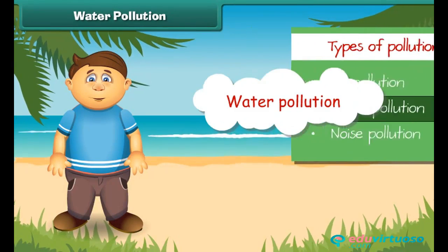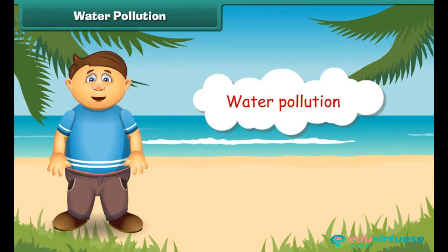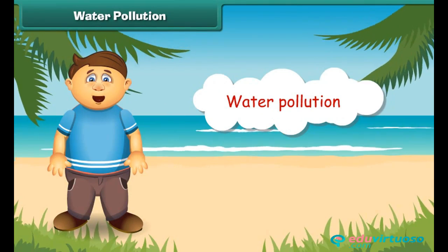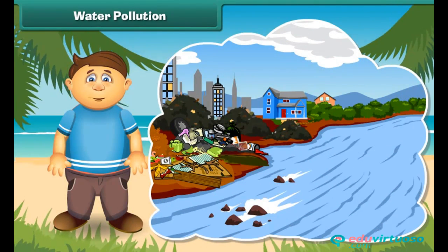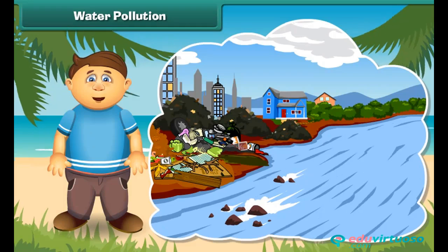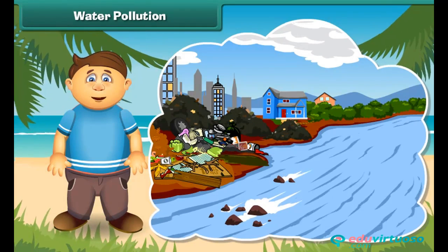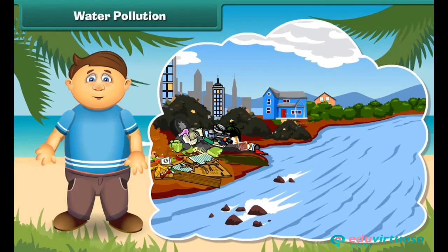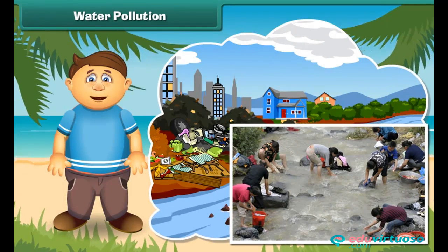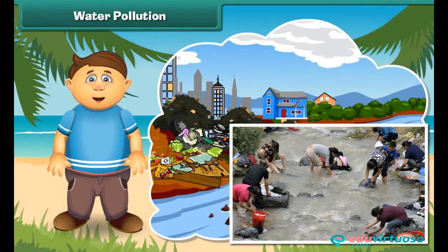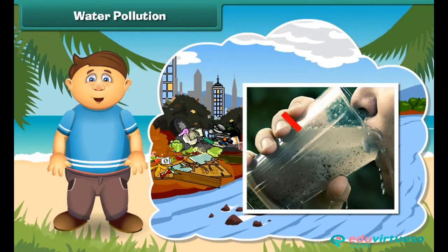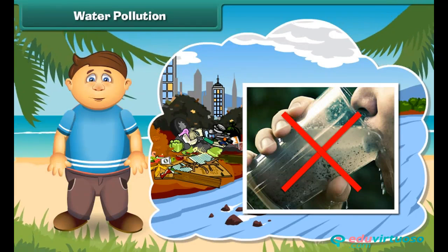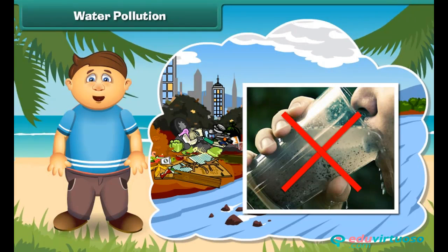Like air, water also gets polluted. Look at this river — it is very dirty. It receives sewage from homes and wastes from factories. Some people also wash their clothes and throw waste into it. We should not drink this water as it contains germs and may result in diseases.